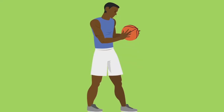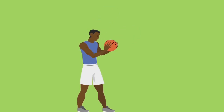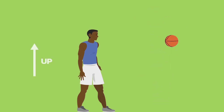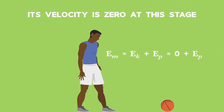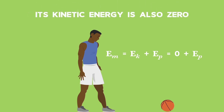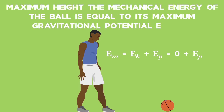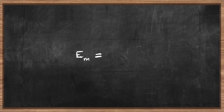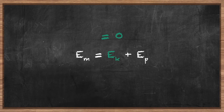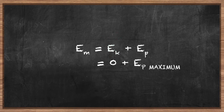Now let's find out the maximum height the ball reaches above his hand. At its maximum height, the ball changes direction from going up to coming back down — its velocity is zero at this stage, so its kinetic energy is also zero. At the maximum height, the mechanical energy of the ball equals its maximum gravitational potential energy: EM = EK + EP, and since EK = 0, EM = EP_max.